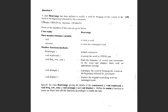Hello guys, welcome to Code with PK. In this video I'm going to solve question 9 of ISC 2019 computer science theory paper. It says a class 'Rearrange' has been defined to modify a word by bringing all the vowels in the word at the beginning, followed by the consonants. For example, the word 'original' becomes 'OIIA' followed by the consonants.